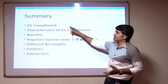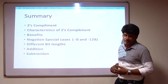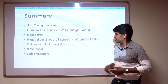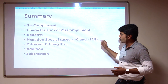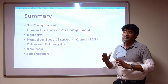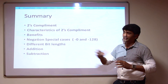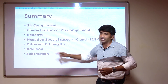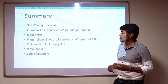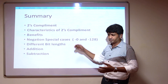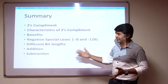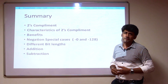In summary: we have discussed what 2's complement is, the characteristics of 2's complement, the benefits, and the two negation special cases — minus 0 and minus 128. We also covered different bit lengths and their ranges, converting between bit lengths such as 8-bit to 16-bit, addition, and subtraction. In both addition and subtraction, the overflow bit was discussed — the result may not be considered when both numbers are positive or both numbers are negative and overflow occurs. This concludes the summary of 2's complement representation. Thank you.